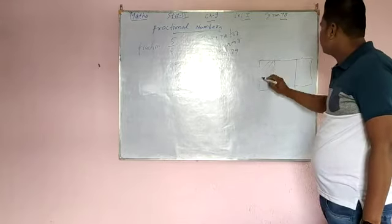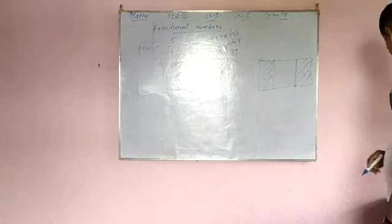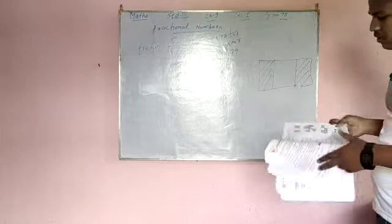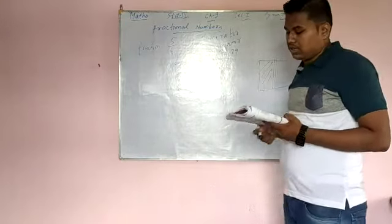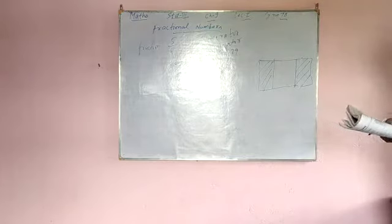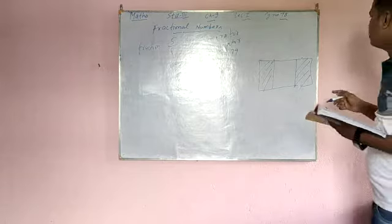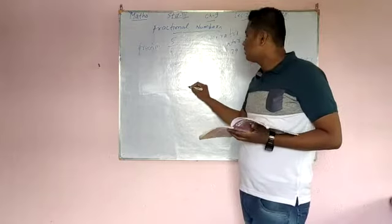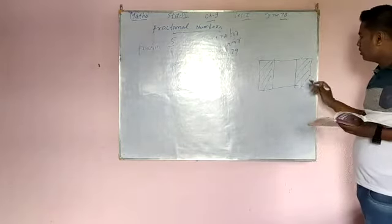This part is shaded. This part is also shaded. First question is: in how many equal parts is the figure divided? So the figure is divided into 1, 2, 3, 4, 5 parts.